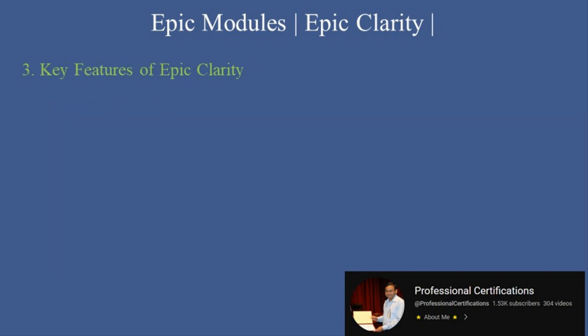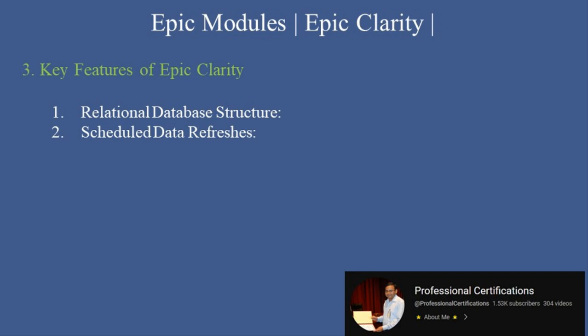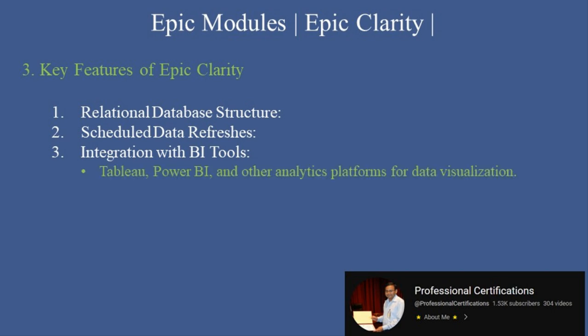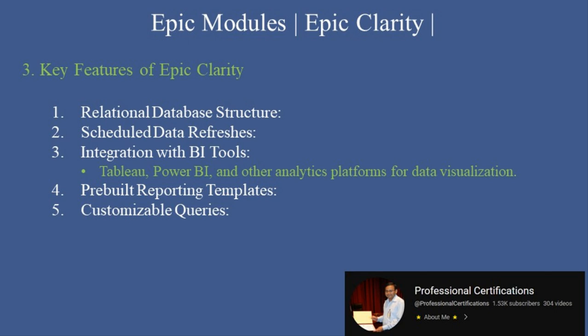Key features of Epic Clarity. Epic Clarity is packed with features that make it indispensable for healthcare analytics. First, relational database structure — uses tables, rows, and columns for efficient querying and reporting. Second, scheduled data refreshes — regularly updates data from Chronicles to ensure reports remain accurate and timely. Third, integration with BI tools — connects with Tableau, Power BI, and other analytics platforms for data visualization. Fourth, pre-built reporting templates — includes standard templates for common healthcare metrics like patient outcomes and financial performance. Fifth, customizable queries — allows users to write SQL queries tailored to their organization's needs. Sixth, data security — ensures compliance with HIPAA and other regulations through role-based access controls.